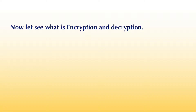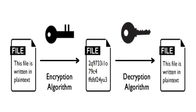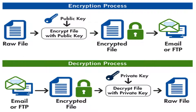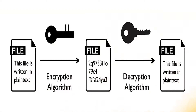Now let us see what is encryption and decryption. Encryption is the process of transforming data or information so it is illegible to anyone but the intended recipient. Decryption is the process of transforming encrypted data or information so that it is legible again. A mathematical function called a cipher, which is a cryptographic algorithm, is used for encryption or decryption.